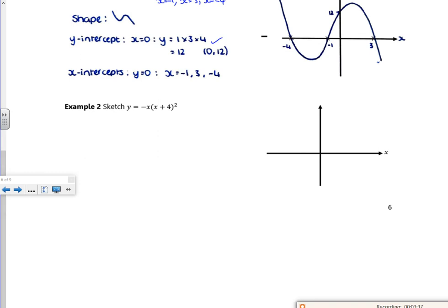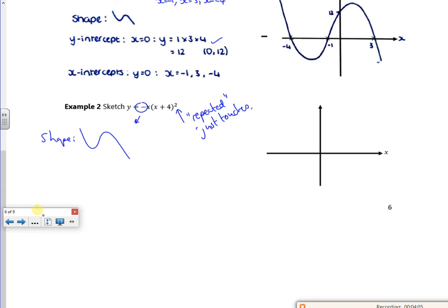Right, this is quite nice. The square tells us it's a repeated root, so it just touches. The minus at the front tells me the shape will be upside down. Let me move that down.